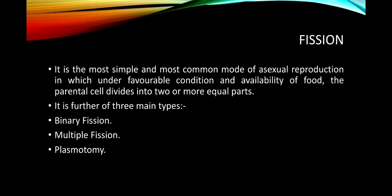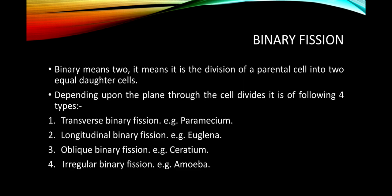On the basis of the number of individuals produced, fission is of three main types: binary fission, multiple fission, and plasmotomy. Binary means two — it is the division of the parental cell into two equal daughter cells. In the case of amoeba, the body divides into two equal halves.